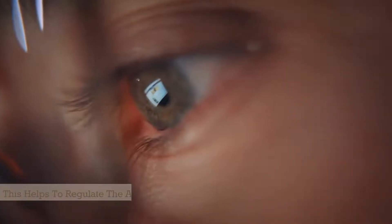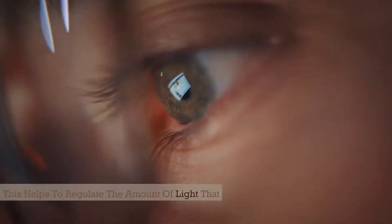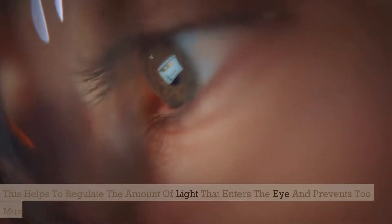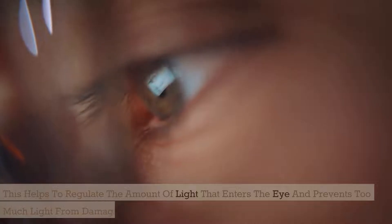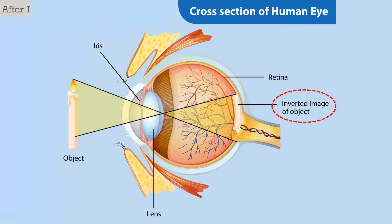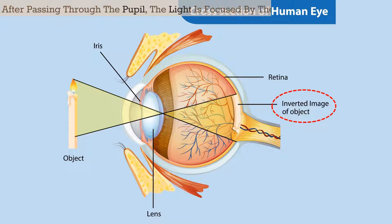This helps to regulate the amount of light that enters the eye and prevents too much light from damaging the sensitive tissues inside. After passing through the pupil, the light is focused by the lens, which is located behind the pupil.